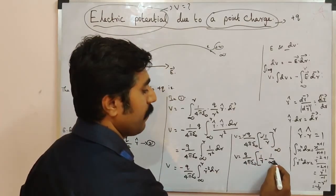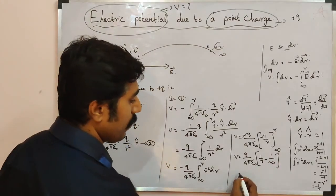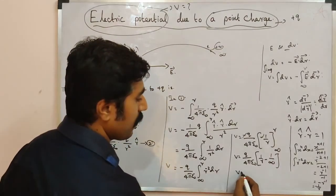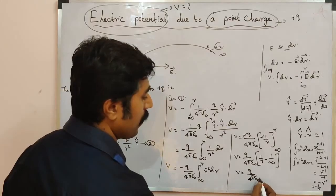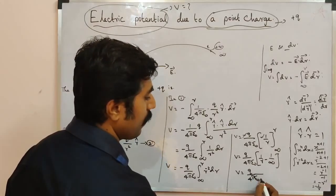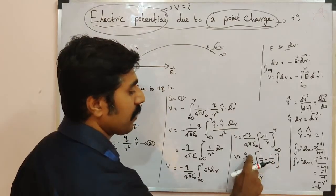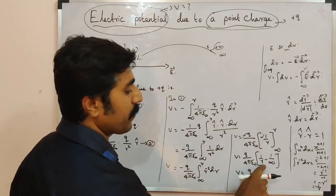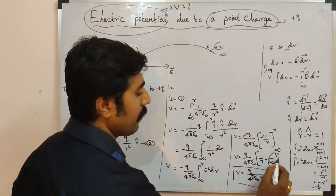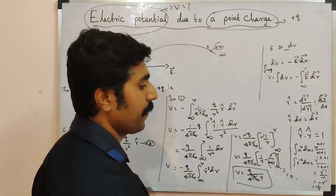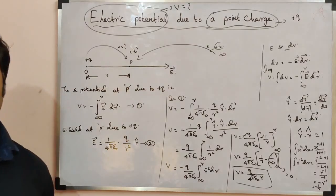Applying the limits: the lower limit gives 1/infinity = 0. Therefore V = (Q/4πε₀) · (1/r − 0) = Q/(4πε₀r). This is the electric potential due to a point charge. This is an important result — a 5-mark answer.